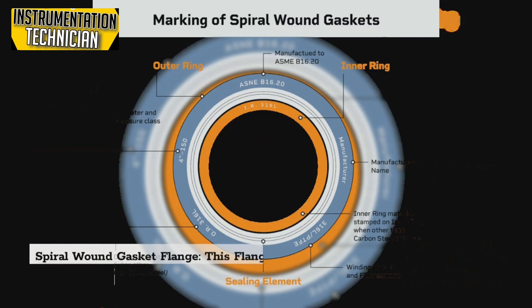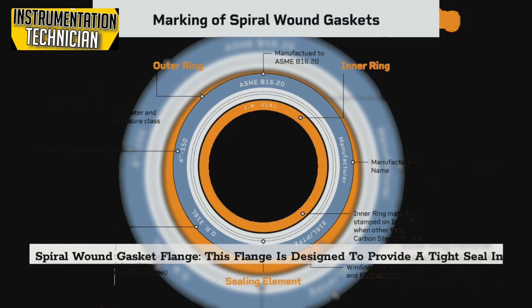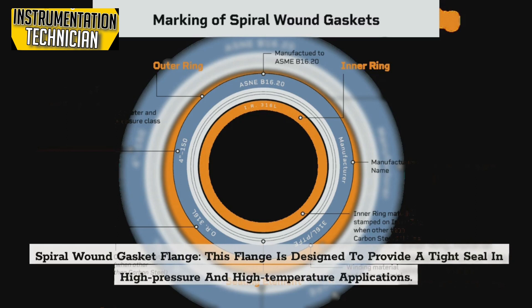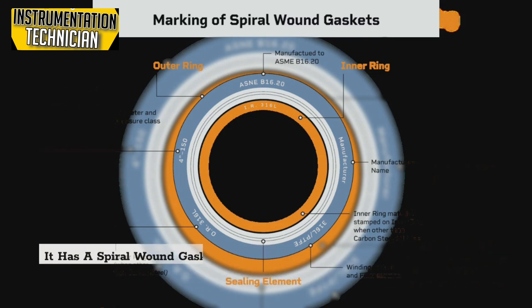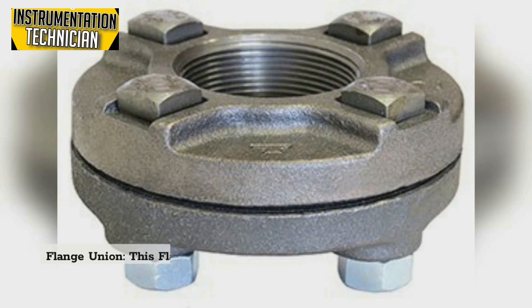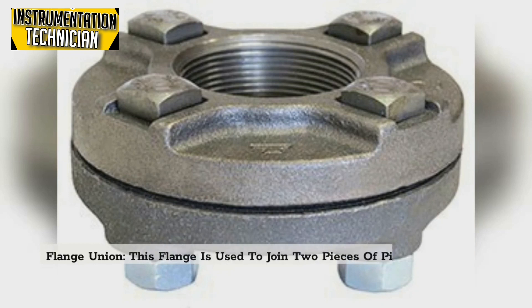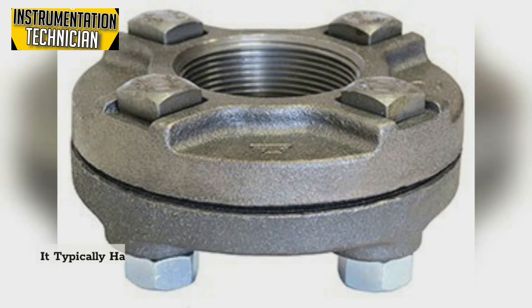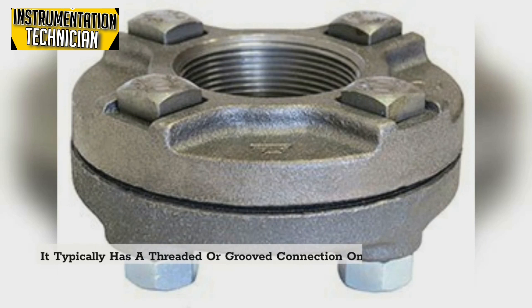Spiral wound gasket flange: This flange is designed to provide a tight seal in high pressure and high temperature applications. It has a spiral wound gasket that is inserted between the flange faces to create a seal. Flange union: This flange is used to join two pieces of pipe together in a removable manner and typically has a threaded or grooved connection on one end and a flange on the other end.